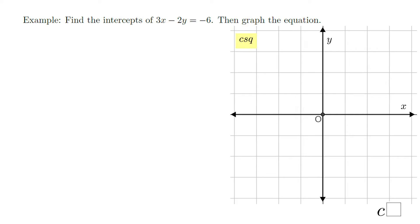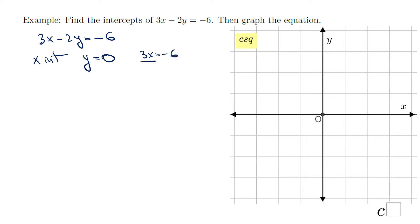A similar example: 3x - 2y = -6. I'm going to find the x-intercept, which means y equals zero. When y is zero, that term disappears, so we have 3x = -6. Divide by 3: x = -2. So the point is (-2, 0), which is right here.